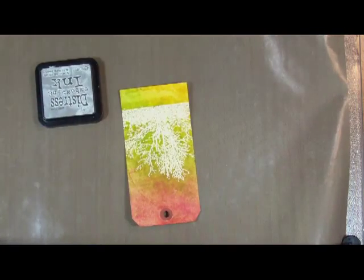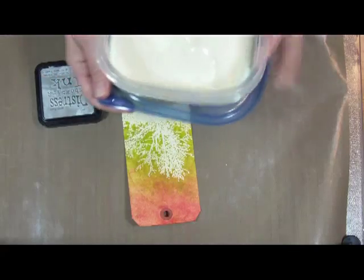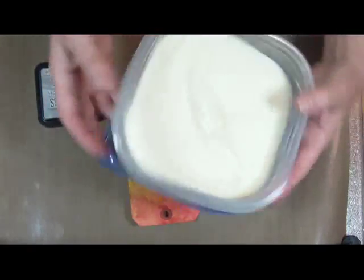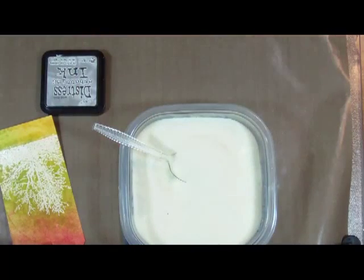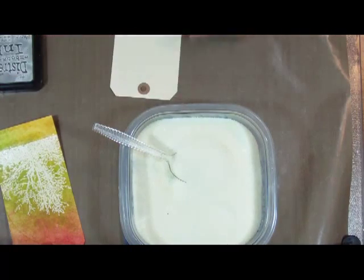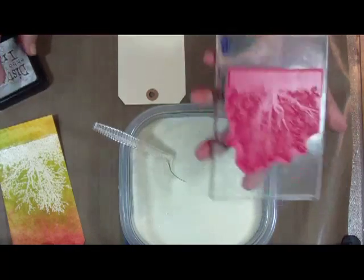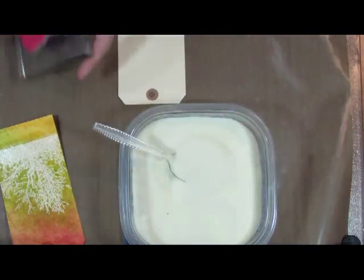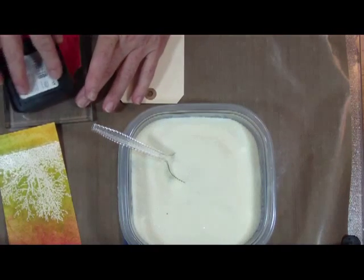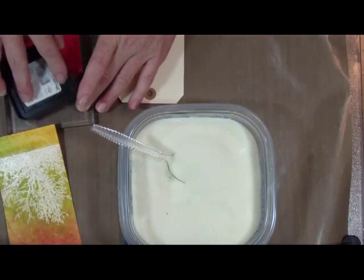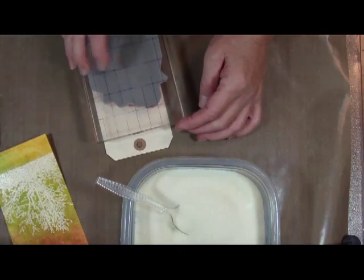I have my embossing ink. I'm using Ranger UD, the ultra thick embossing enamel. And I have my tag and my stamp. So I'm going to first ink up my stamp with the distress embossing ink. And I'm going to have to stand up for this and stamp it here on my tag.